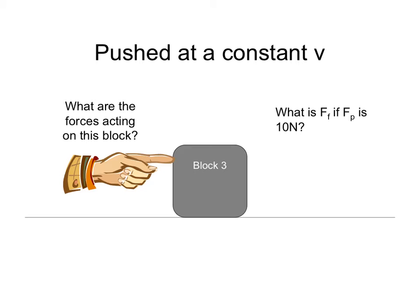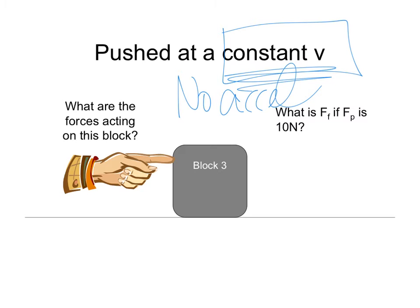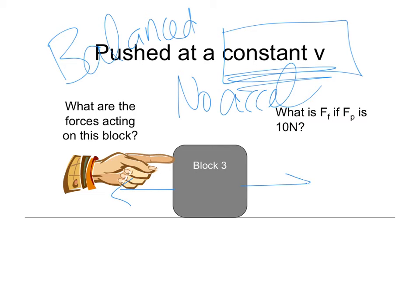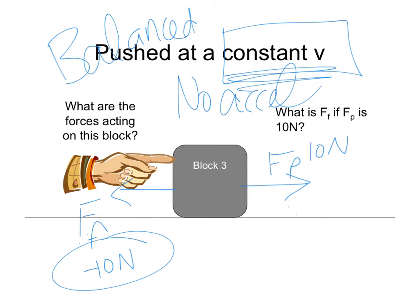Now a box pushed at constant velocity — constant velocity means no acceleration, so this is a balanced force situation. There is an applied force in one direction and a frictional force in the opposite direction. Since there's no acceleration, these must be equal and opposite. If the applied force is 10 newtons, then the force of friction must be negative 10 newtons.